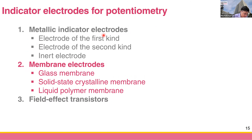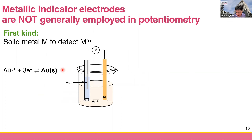Since we have limited time, we will spend most of the time talking about the membrane electrode — we won't study field effect transistors. For metallic indicator electrodes, the only thing you need to know is how to classify them into either the first kind, the second kind, or the inert type. I'm not going to ask you about the mechanism of these three types, but these are good terms to know, for example if you take the GRE chemistry exam. We'll spend most of the time on how the membrane electrode works because you'll see it almost every day in the lab.